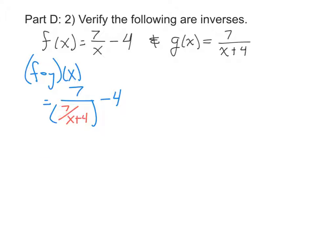So for this first term, we have a fraction inside of a fraction, which means I need to take that 7 and multiply it by the reciprocal, so x plus 4 over 7. So the 7's are going to cancel, and we'll have x plus 4 minus 4, which is x.